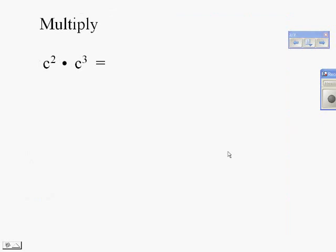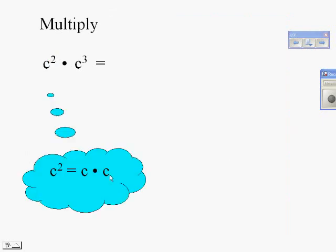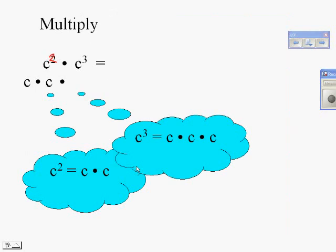Likewise, it's going to make sense when we get to this one. c squared means 2 factors of c. And then we have c cubed — that's 3 factors of c. So 2 factors of c multiplied by 3 more factors of c gives you 5 factors of c, which is c to the fifth. Because these are exponents — it's already repeated multiplication — you can see that you're adding your exponents together.